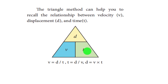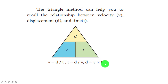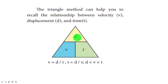You can use the triangle method to find the interrelation between V, D, and T. V equals D by T; T equals D by V; D equals V multiplied by T. In examinations, two values are given and you use this triangle to find the third.